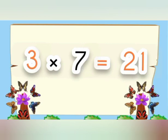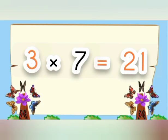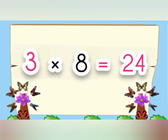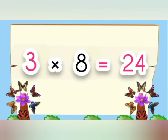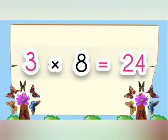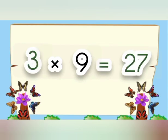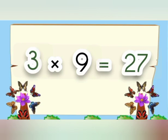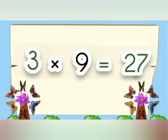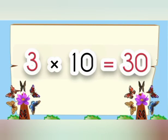7 times 3 is 21. 8 times 3 is 24. 9 times 3 is 27. 10 times 3 is 30.